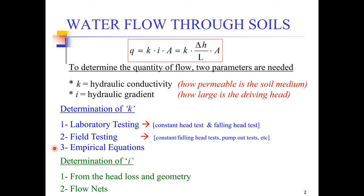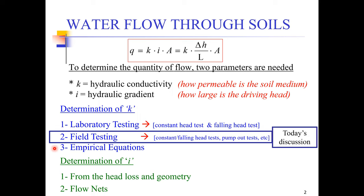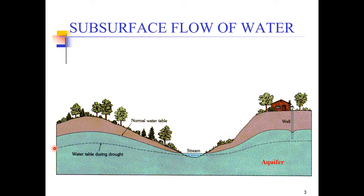In the previous lecture we talked about the determination of hydraulic conductivity by laboratory testing and by some empirical methods. In today's lecture we are going to talk about the determination of hydraulic conductivity k by using different field testing methods. First we'll cover a few basics about how water flows through the soil and some basic terms, and then we will come to our actual topic: the in-situ determination of hydraulic conductivity.